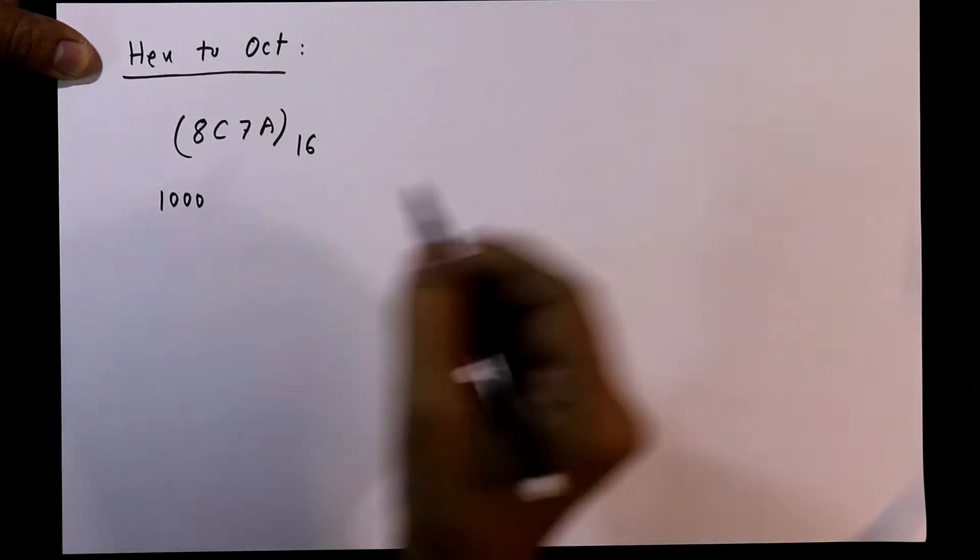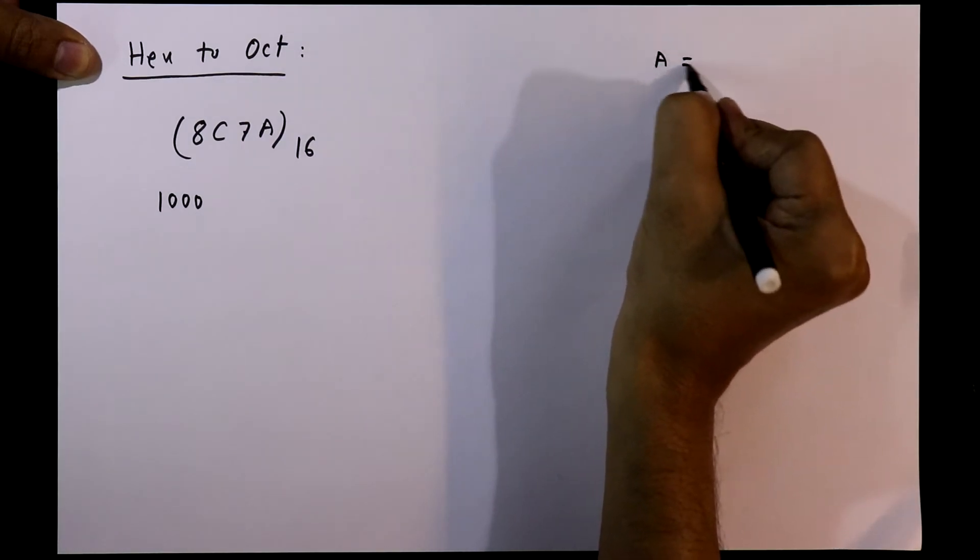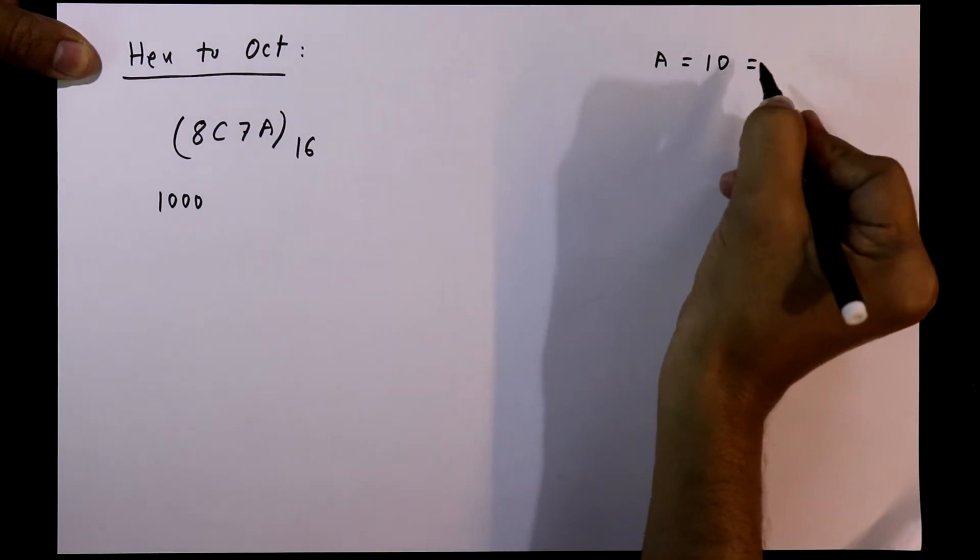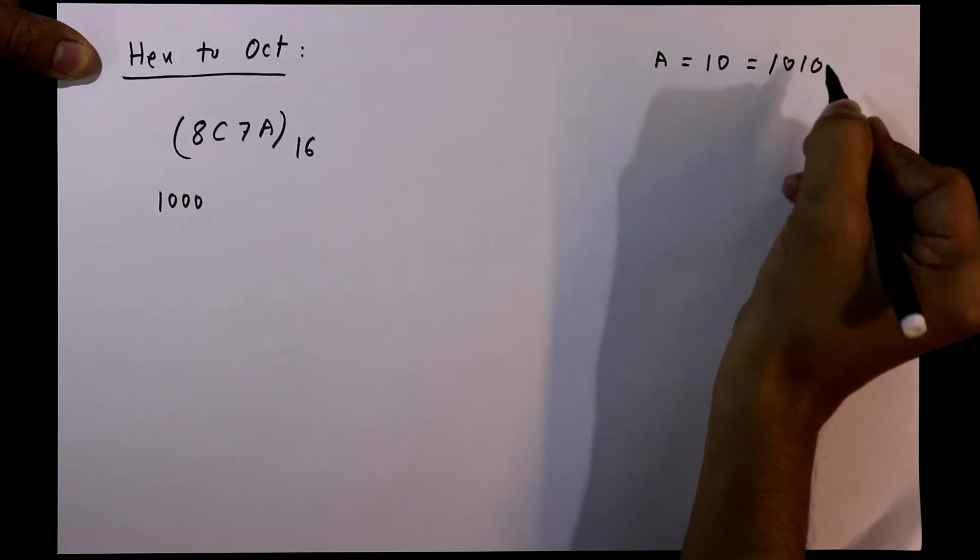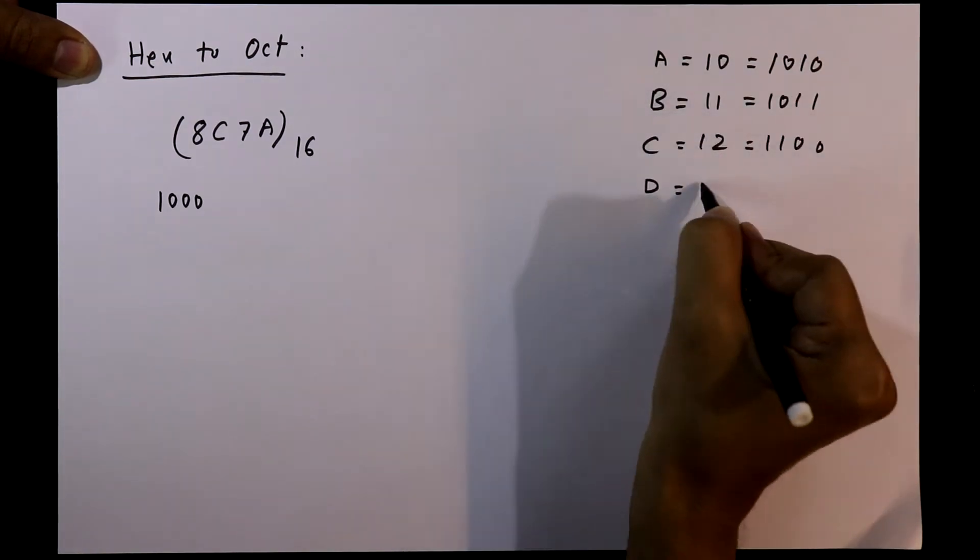For C it is... we know A equal to 10, and in binary it is 1010. Like this we can write it.